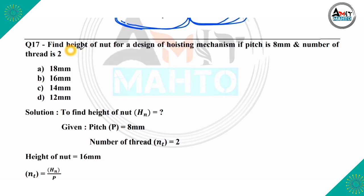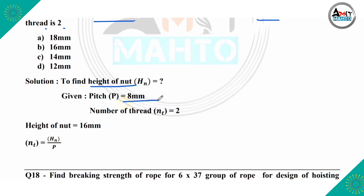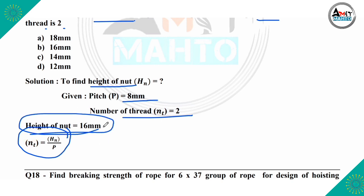Next question: find the height of nut for a design of a hoisting mechanism. Given data: pitch P = 8 mm, number of threads = 2. The formula is: number of threads = height of nut / pitch. Substituting the values: height of nut = number of threads × pitch = 2 × 8 = 16 mm. So option B is the correct answer, with height of nut = 16 mm.